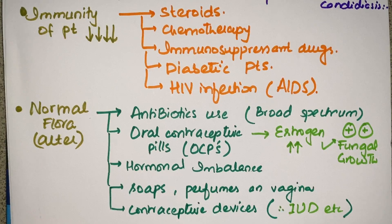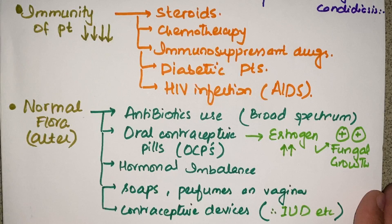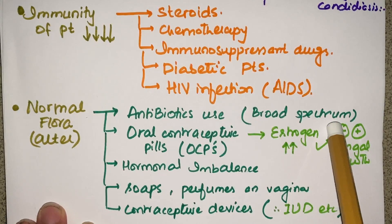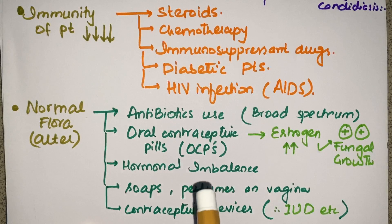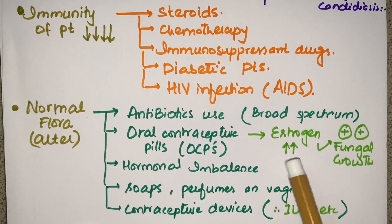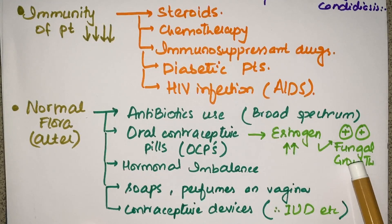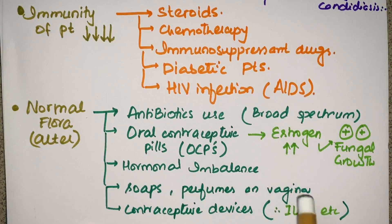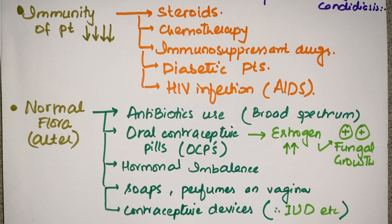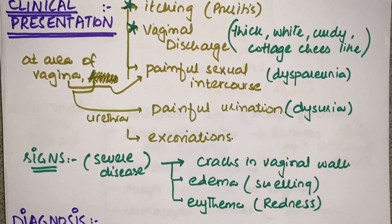Factors that alter the normal flora include taking a lot of antibiotics — particularly broad-spectrum antibiotics — which kill bacteria and disturb the normal flora. Oral contraceptive pills contain estrogen, which stimulates fungal growth, so patients using estrogen-rich OCPs are more prone to vaginal candidiasis. Hormonal imbalances, use of soaps and perfumes on the vagina, and intrauterine contraceptive devices also cause vaginal candidiasis.